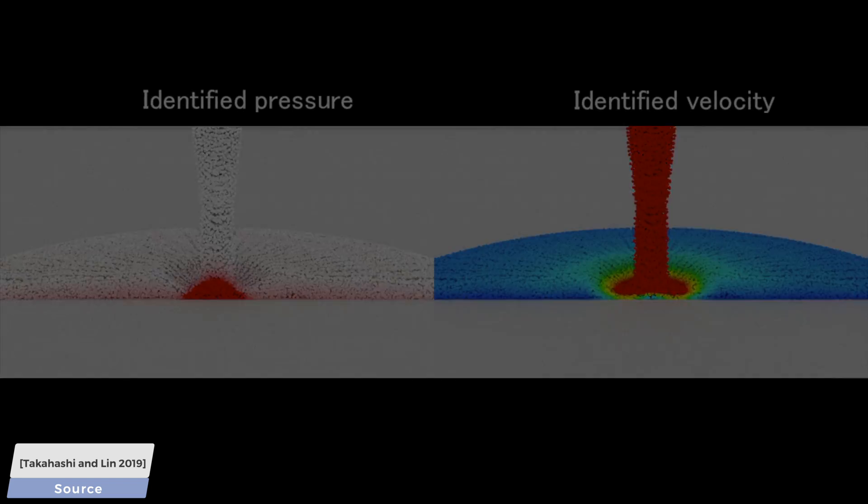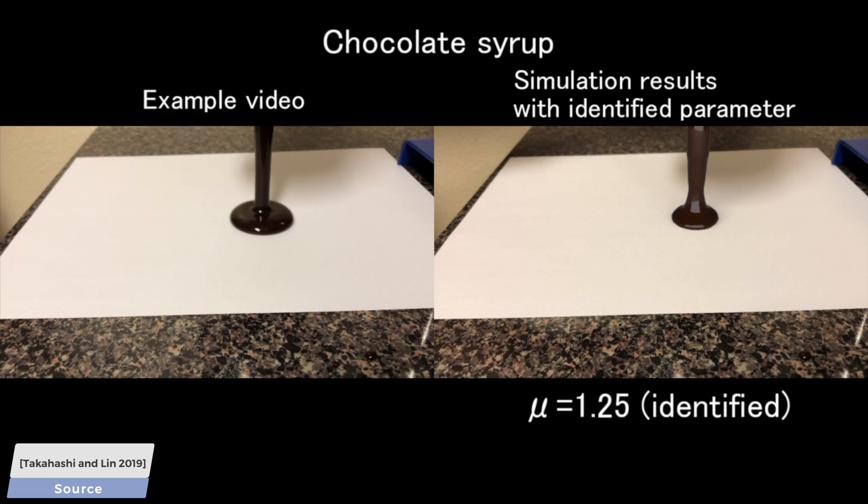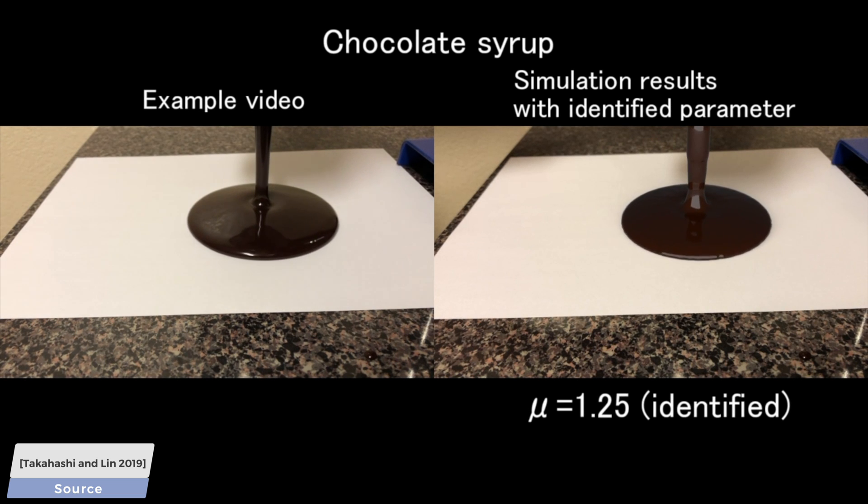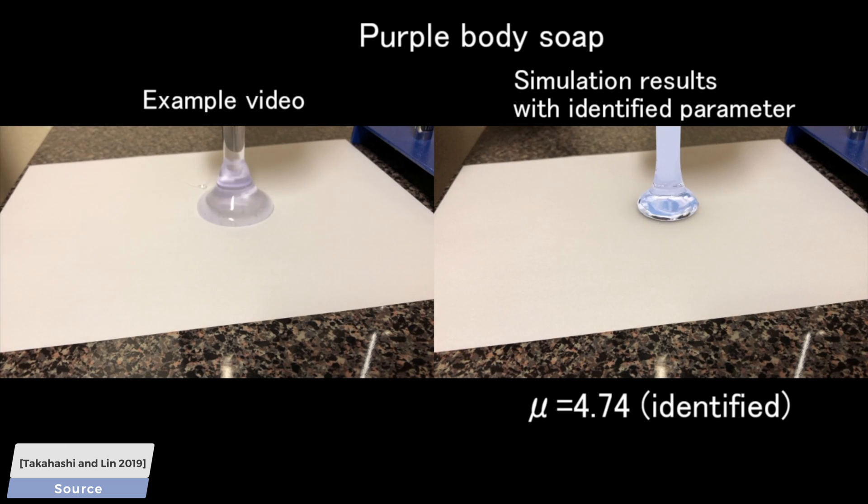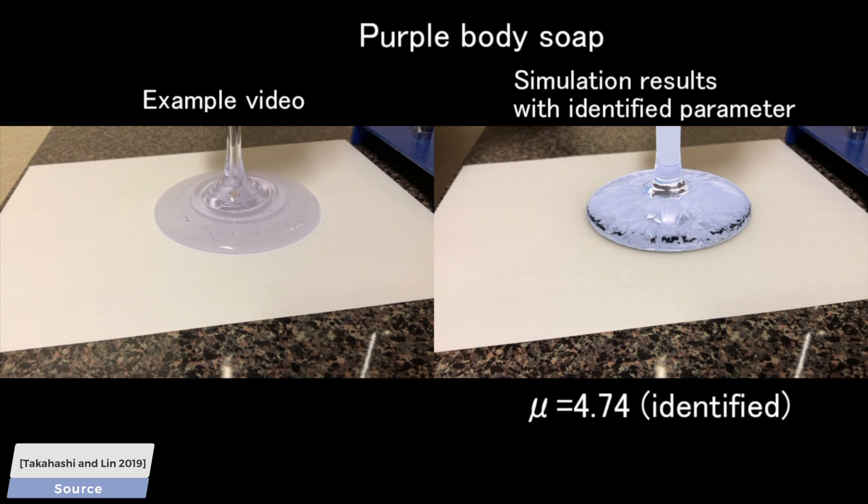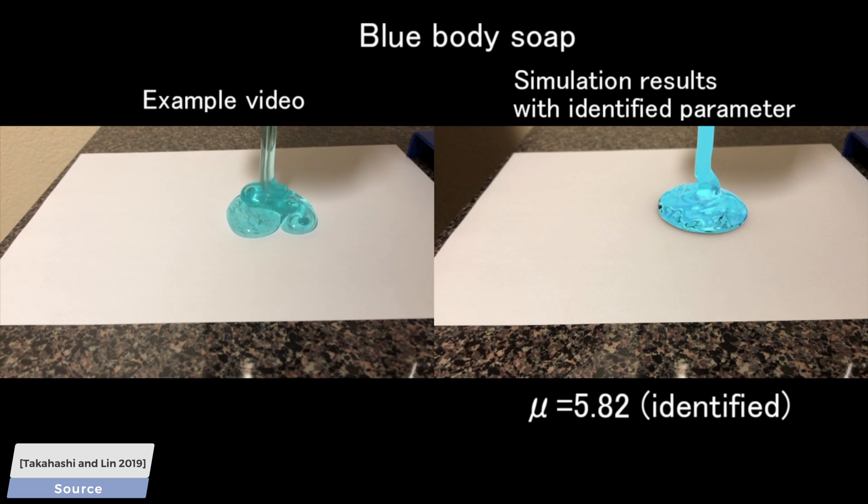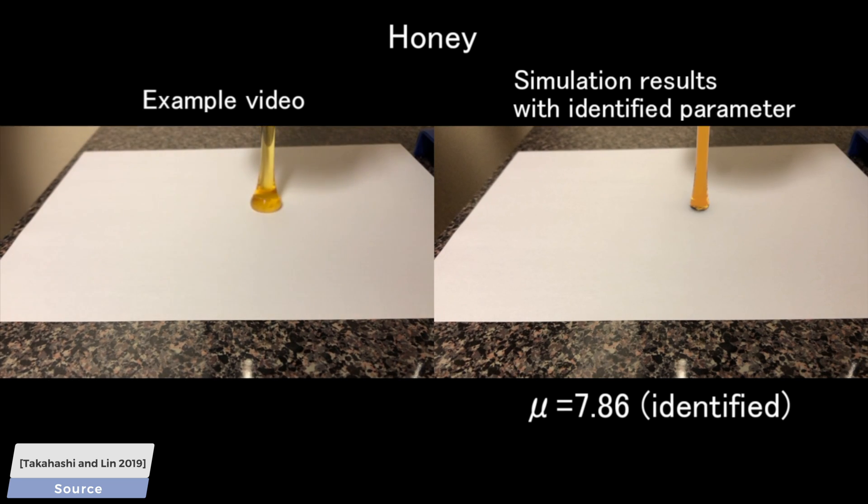For instance, whether the honey has the proper color or translucency is not the point here. What we are trying to reproduce is not how it looks, but how it moves. It works on a variety of different fluid types. I have slowed down some of these videos to make sure we can appreciate together how amazingly good these estimations are.